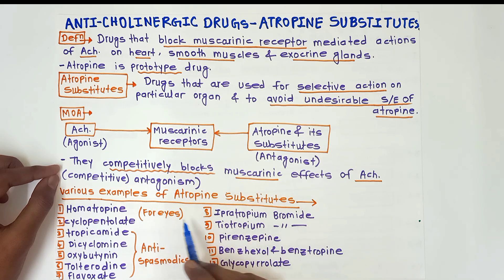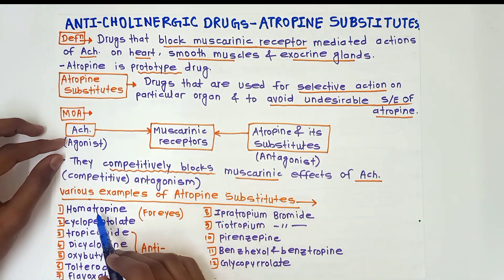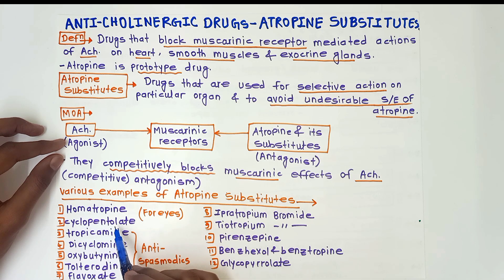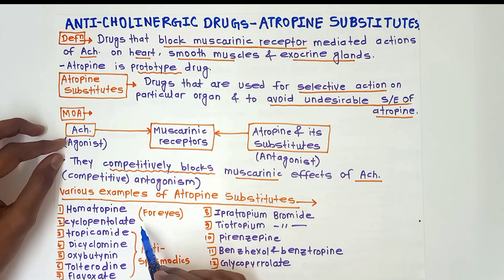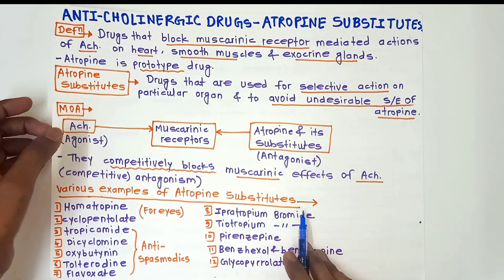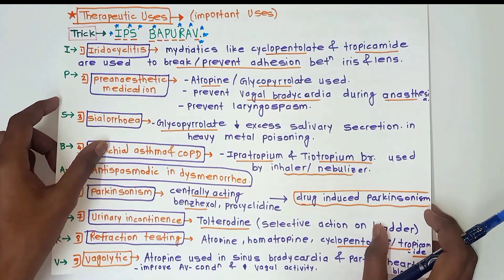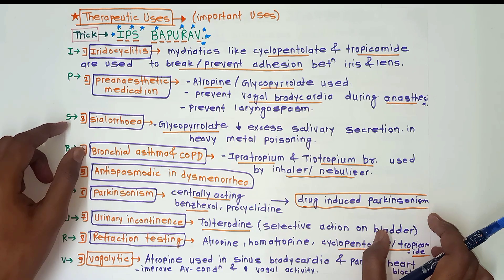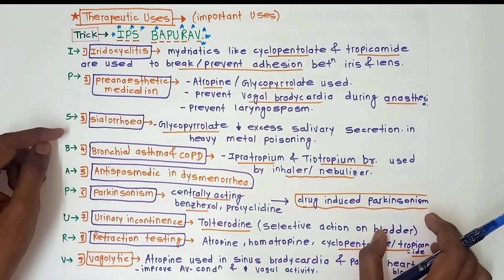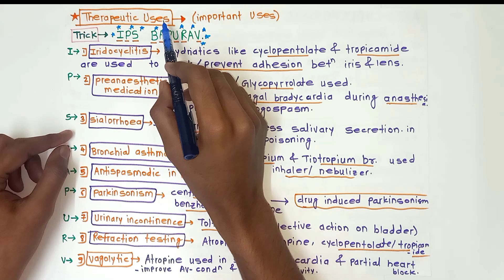Homatropine, cyclopentolate, and tropicamide are used for the eyes. Dicyclomine, oxybutynin, tolterodine, and flavoxate are antispasmodic atropin substitutes. Next, we will cover the therapeutic uses of atropin substitutes.